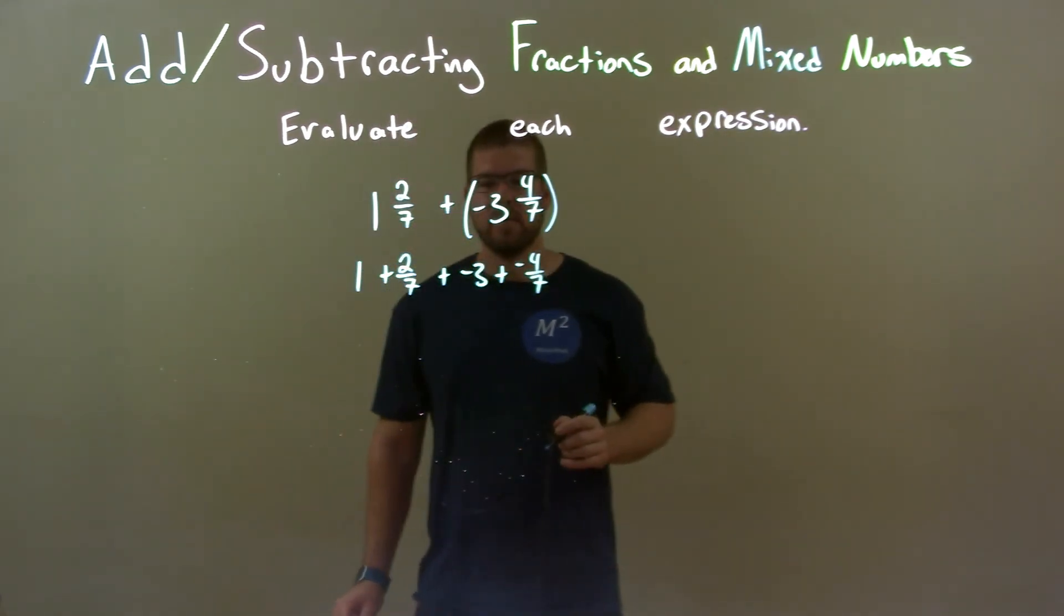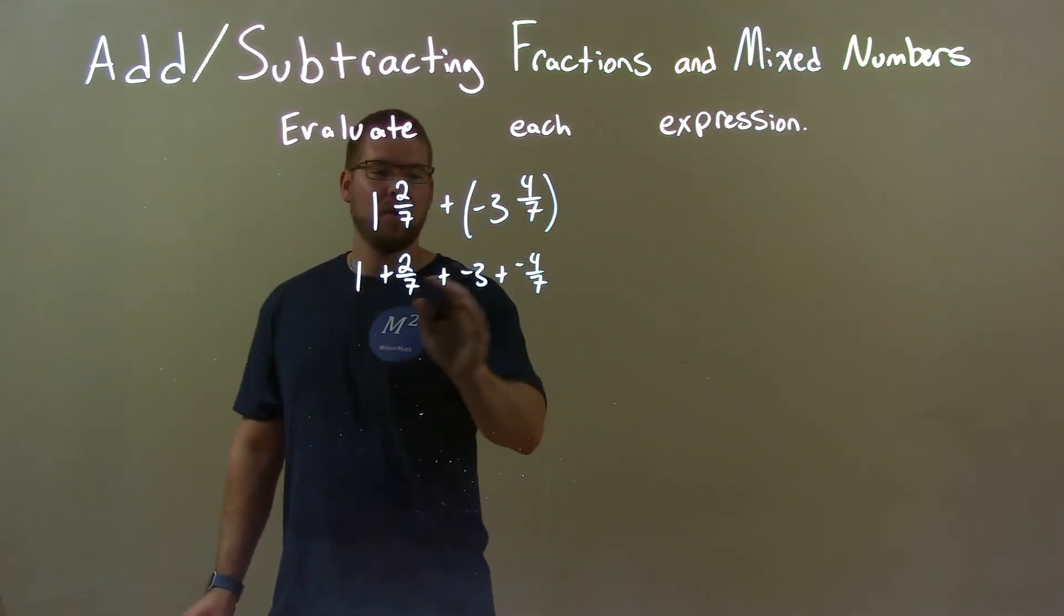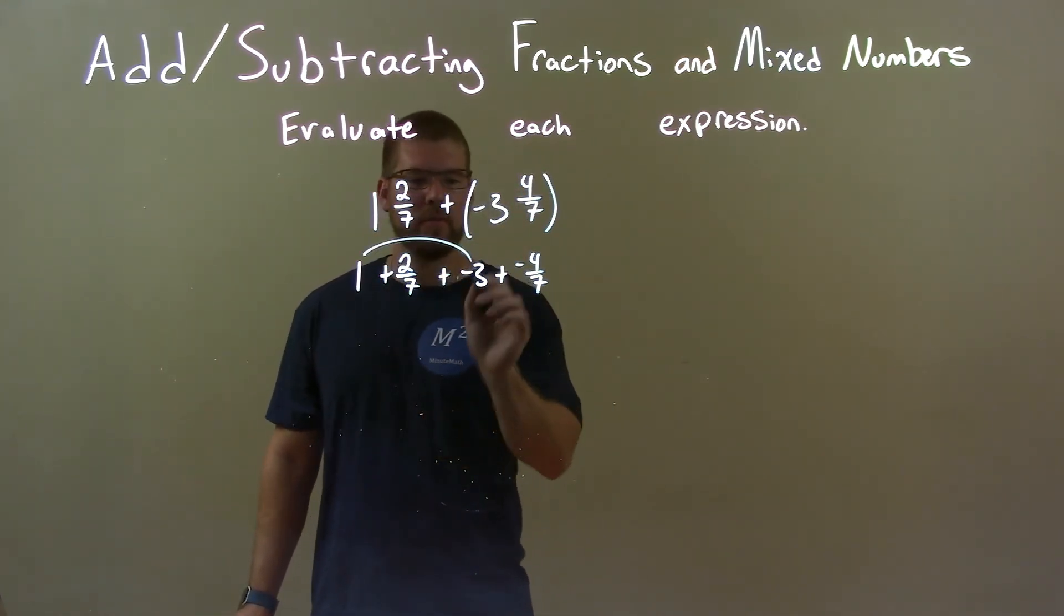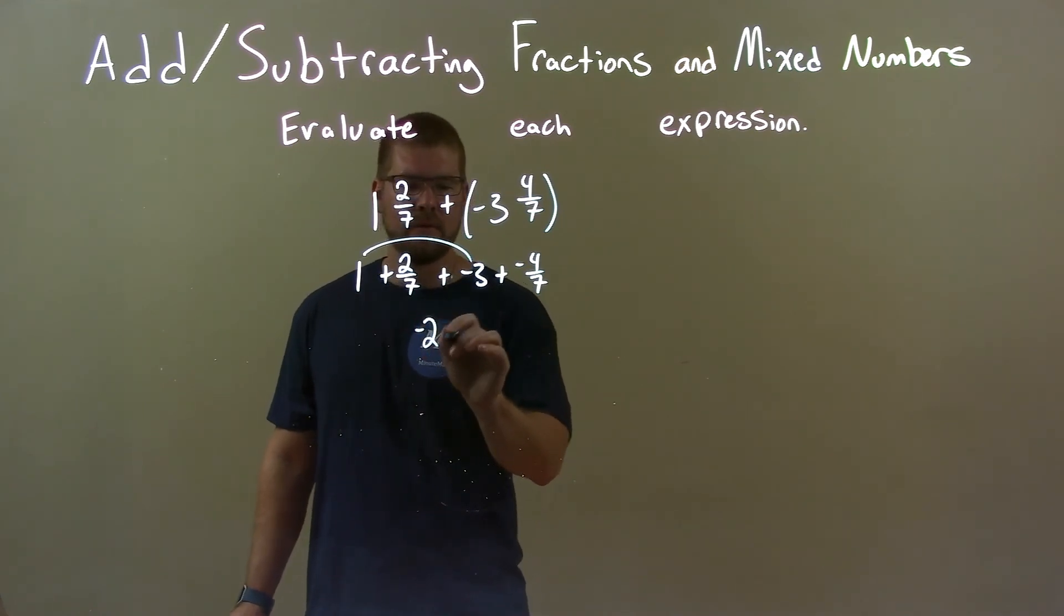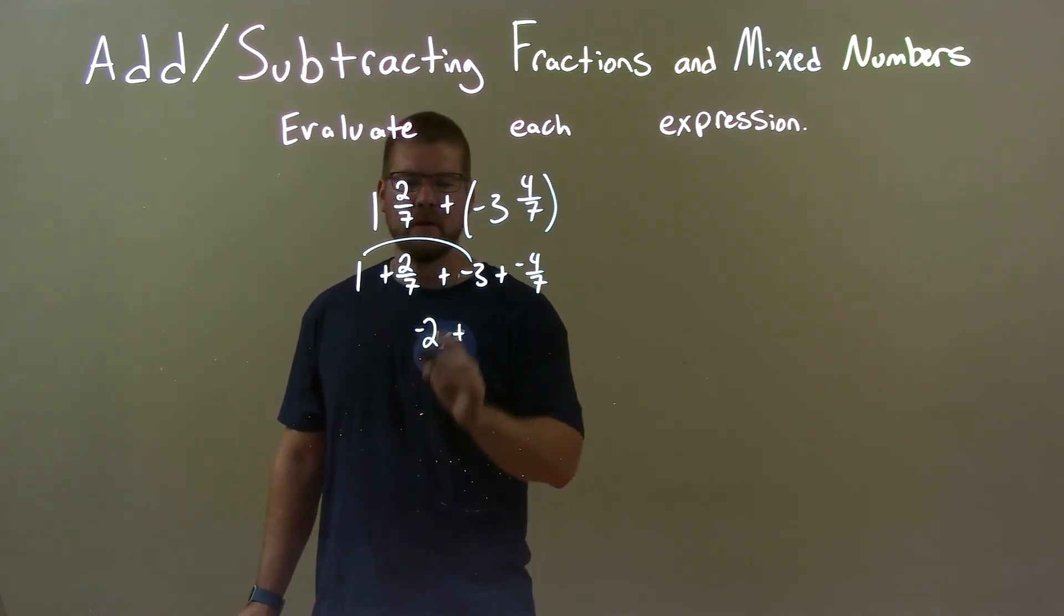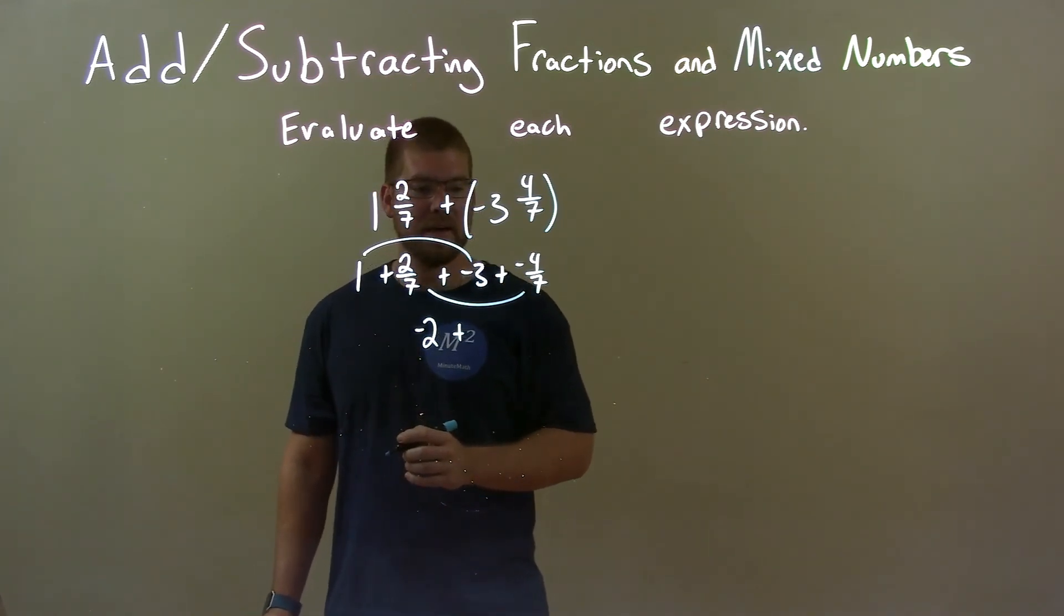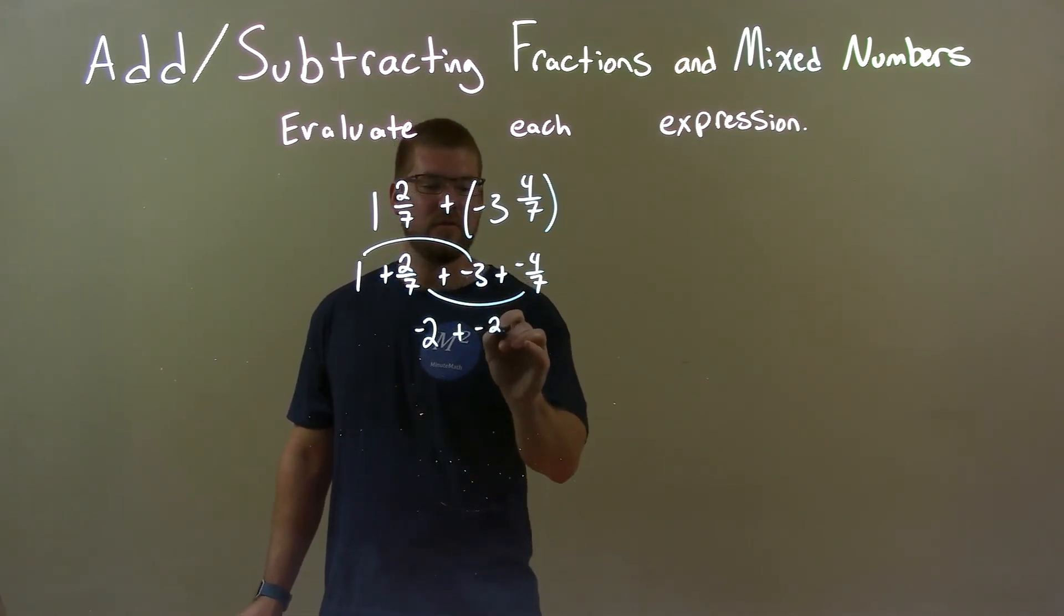And now what I'm going to do is add the whole numbers as well as the proper fractions. So, 1 and negative 3 is negative 2. Plus here, 2 sevenths and negative 4 sevenths is negative 2 sevenths.